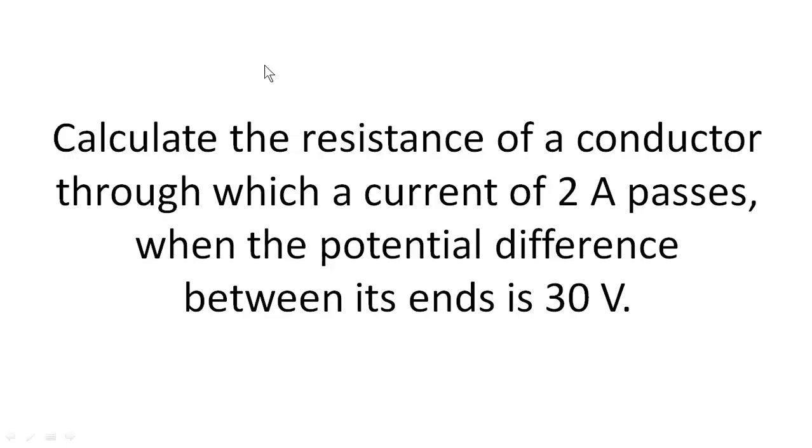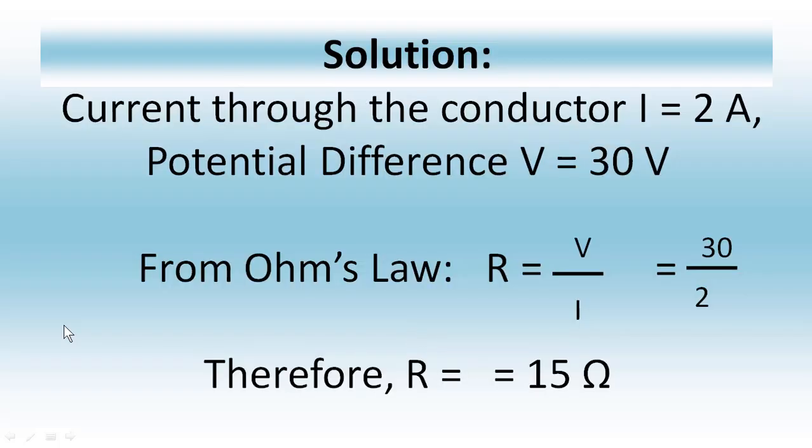Come to the next case. Calculate the resistance of a conductor through which a current of 2 ampere passes when the potential difference between its ends is 30 volt. Now let us come to the solution. Current through the conductor I is given as 2 ampere, and the potential difference V is given as 30 volt. And you have to remember Ohm's law. That is, Ohm's law is V is equal to I into R. But here what is given? I and V are already given. So you have to predict that R should be the answer we have to find out. R is equal to V by I. What is given for V? It is 30, and for I it is 2. So you have to strike out these two numbers. Then you will get R is equal to 15 Ohm is the answer for this question.